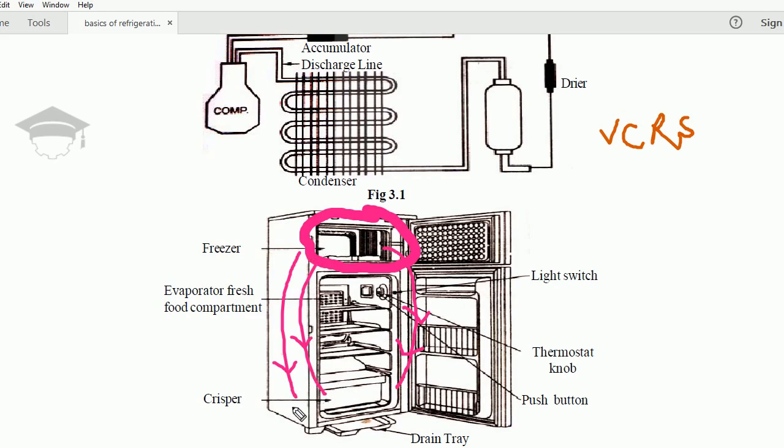We keep the fresh food somewhere in the middle. Here the temperature ranges around more than 0 degrees but less than 20 degrees. So 0 to 20 degrees—general food we keep in this compartment.